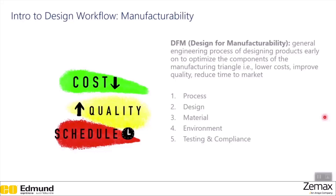In DFM, the process component asks: what is the best method of manufacturing for this product, and which manufacturing process will deliver the required quality at a reasonable cost? Material properties to consider are thermal, optical, flammability, electrical, mechanical, and aesthetic. For design, we consider physical components which must be realistic and producible — geometry and other considerations are critical here.